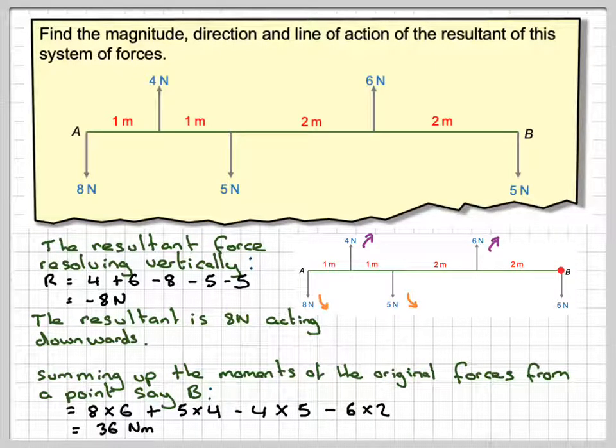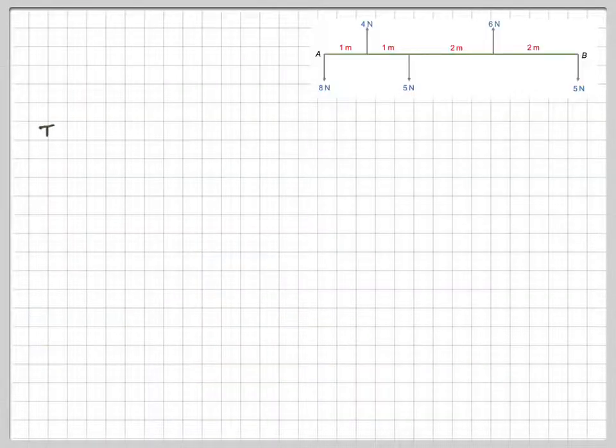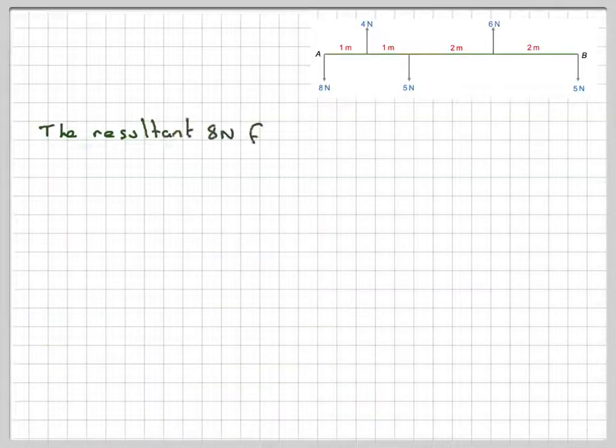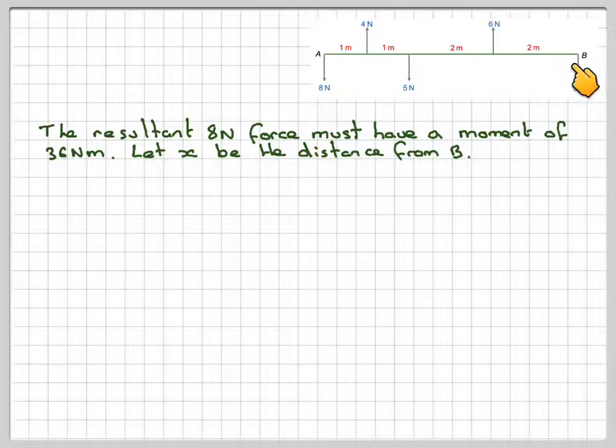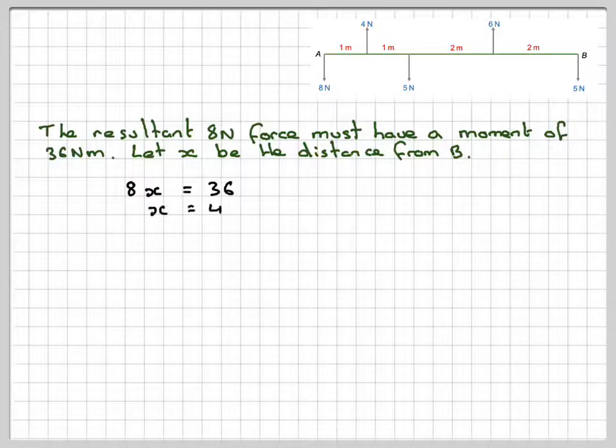So the total moment of these forces, so this resultant must be the same as 36 newton meters. So the resultant eight newton force must have the same moment of 36 newton meters. So let X be the distance from B, we'll take same from B because we summed up the moments from point B. So therefore we say eight X is equal to 36 and therefore X is equal to 4.5 meters.